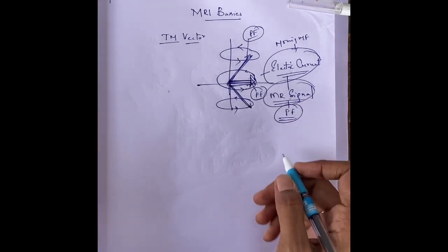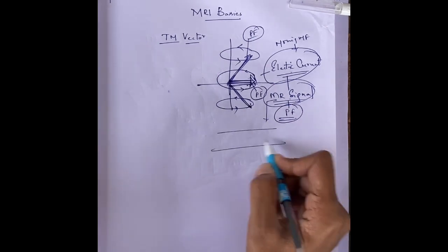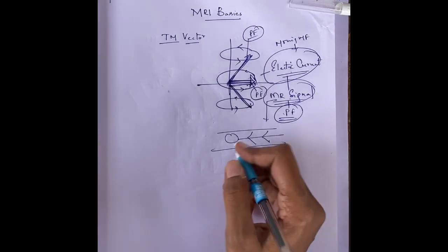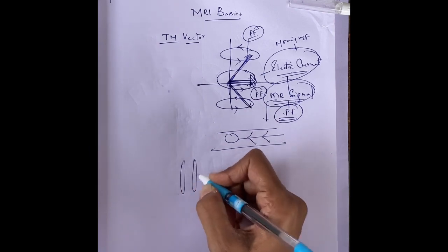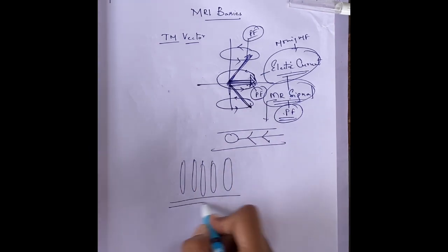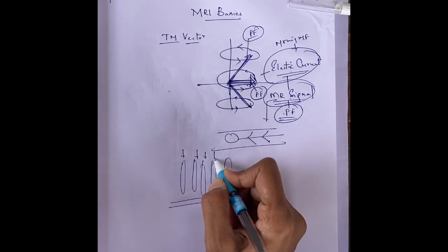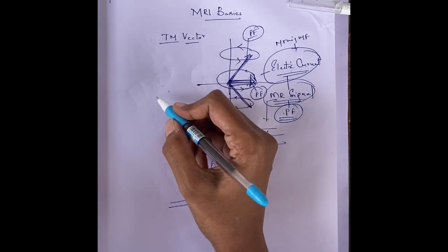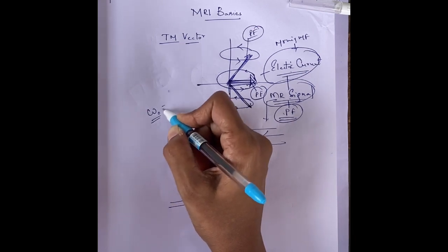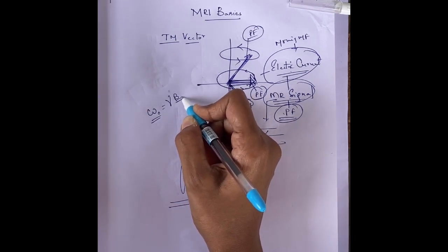The next point is: from which part of the body are we getting this signal? If you take a cross section of the body, at each point we are applying a different strength of magnetic field. We have the Larmor equation: precession frequency equals gyromagnetic ratio multiplied by magnetic field.